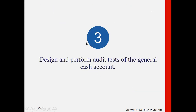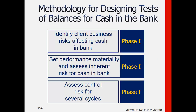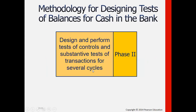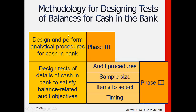For objective three, we design and perform audit tests of the general cash account. We look at this flow: understanding the client's business risks, performance materiality or tolerable misstatement, and control risk for the cycles affecting general cash. Then we perform tests of controls (TOC) and substantive tests of transactions (STOT) for those cycles, as well as analytical procedures and tests of details or balances to satisfy the balance-related audit objectives or management assertions.